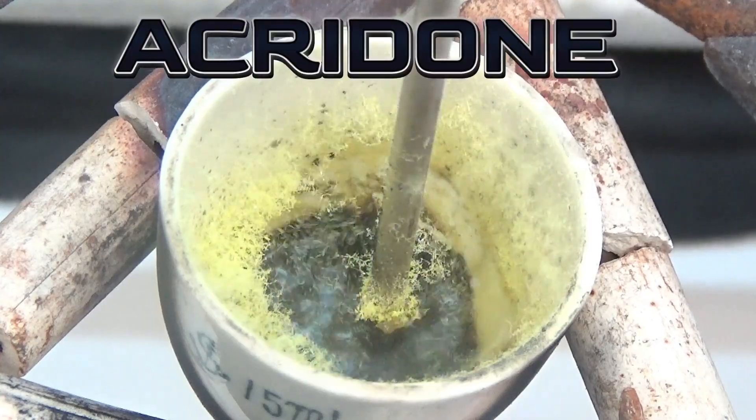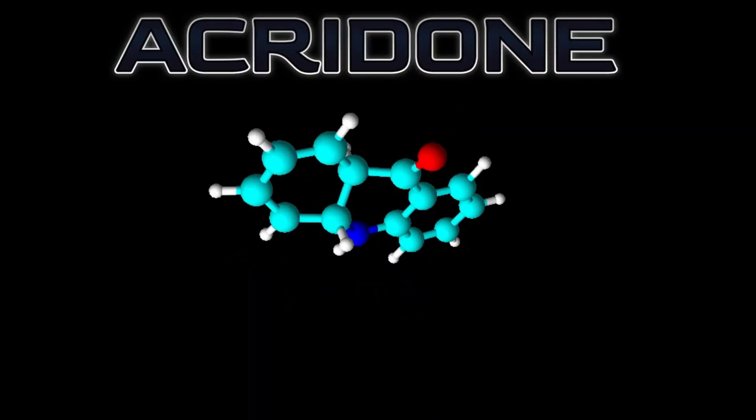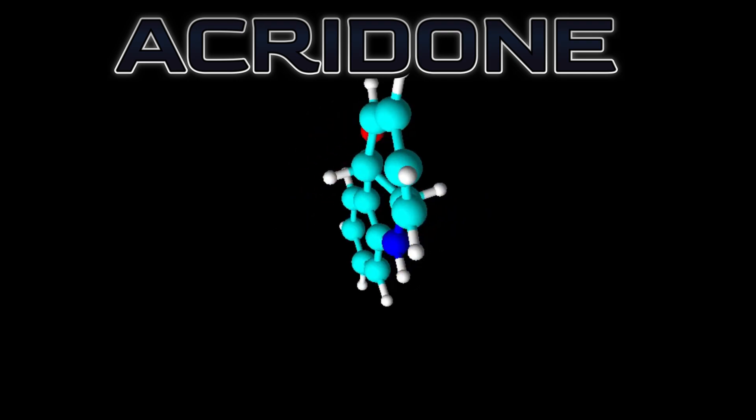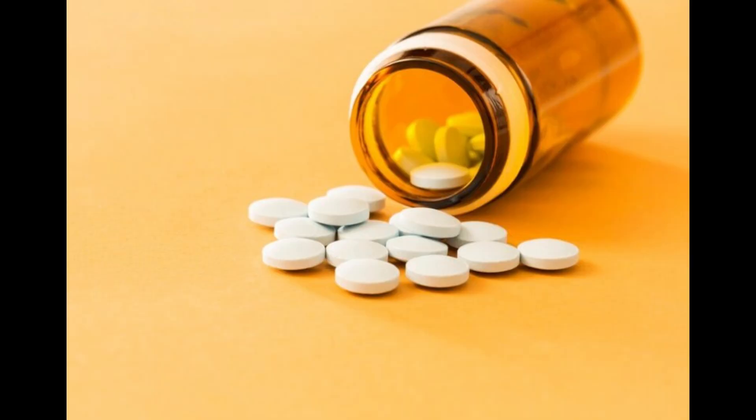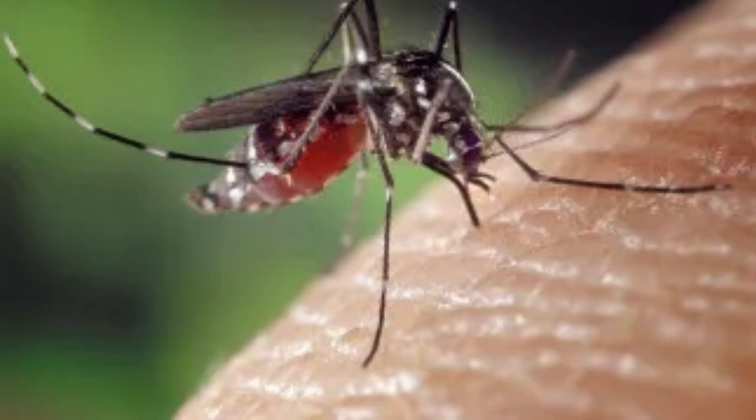In this video we will synthesize acridone. Acridone has the structure of acridine with a carbonyl group at position 9. Acridone is being investigated in the production of anti-malarial drugs.